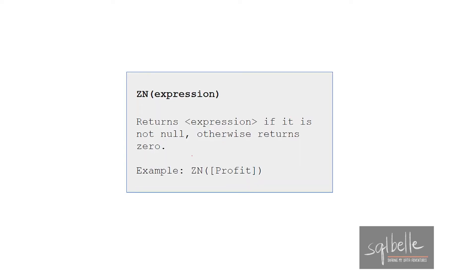The last function we'll use is ZN, which is specific to numeric values. ZN means zero if null — it simplifies conditional checking by simply returning zero if a numeric value is null. Let's jump into Tableau and see all of these in action.